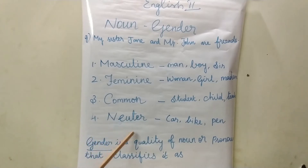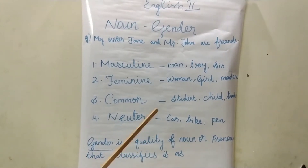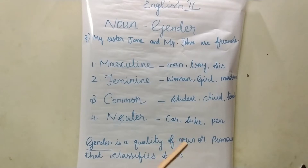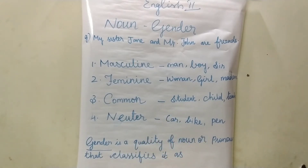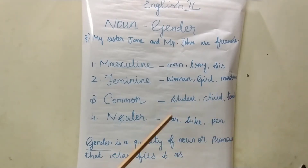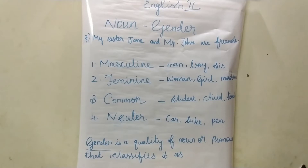The fourth type is neuter gender. It refers to non-living things — that is, neither male nor female. For example: car, bike, pen, door, etc.